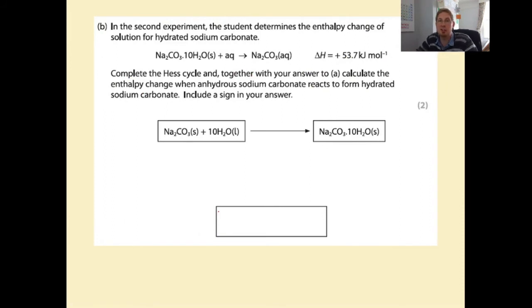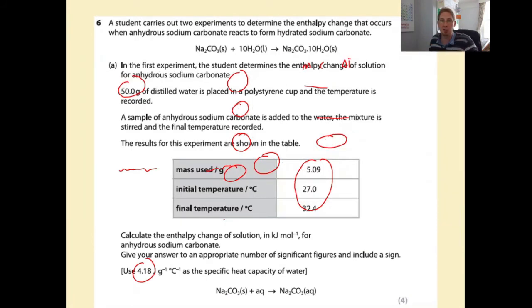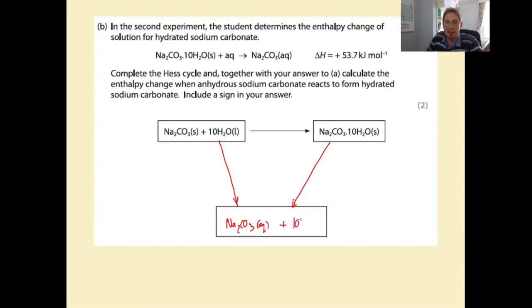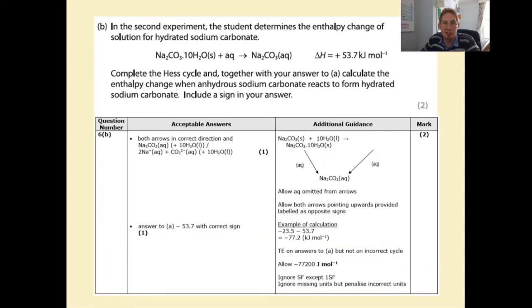In the second experiment the student determines the enthalpy change of solution for hydrated sodium carbonate. Complete the Hess cycle - you dissolved these things in water, so in both cases the arrow goes down to form Na₂CO₃(aq) + 10H₂O(l). Both arrows in the correct direction and the product written down gets one mark. Calculating the answer as minus 53.7 kJ/mol with the correct sign gets the second mark.